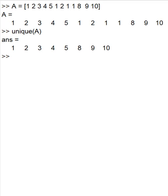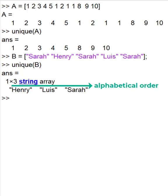You can see that by default it also sorts the data. To prevent sorting, add 'stable'. Now it isn't sorted.